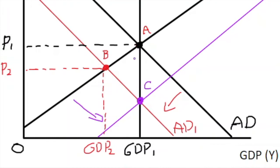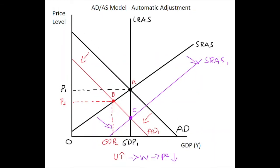So without any policy involvement, without any discretionary policy, just due to revised price expectations, deflationary pressure on wages acting as a stimulus to supply, the economy will return to its potential rate.